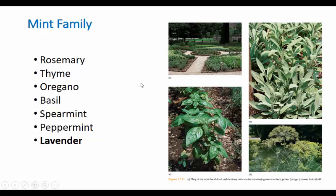Let's talk about members of the mint family. Most make sense as herbs: rosemary, thyme, oregano, and basil are very pervasive herbs used a lot in Mediterranean cooking, but also in England — thyme is very important there, and rosemary grows practically everywhere on the planet. You also have the mints that give the family its name: spearmint and peppermint are the primary ones that get people's attention.